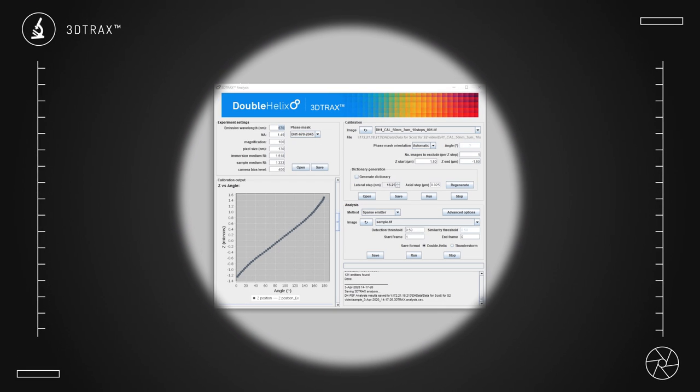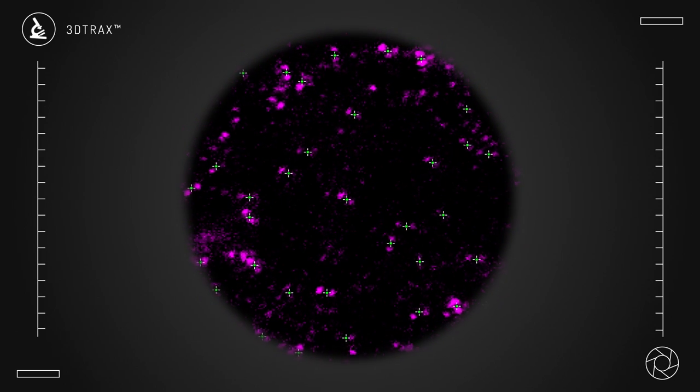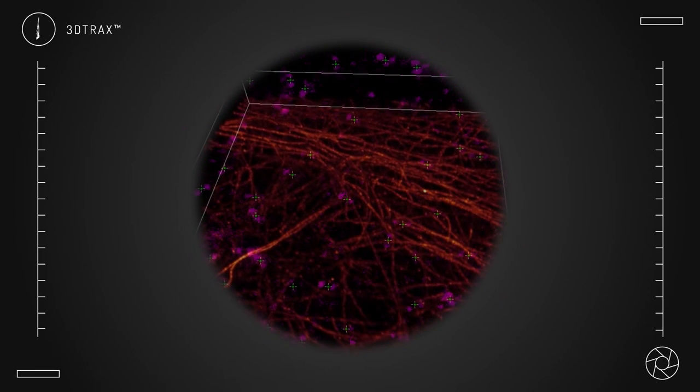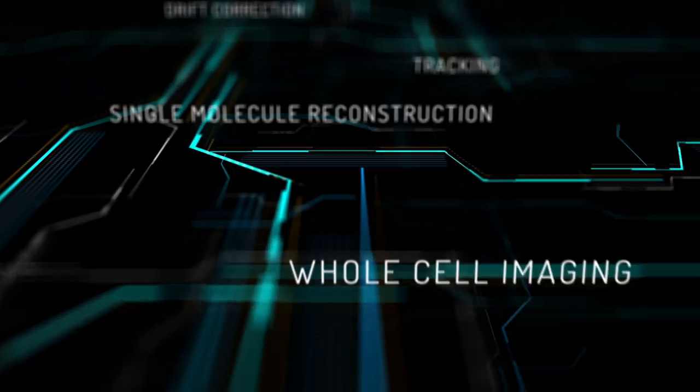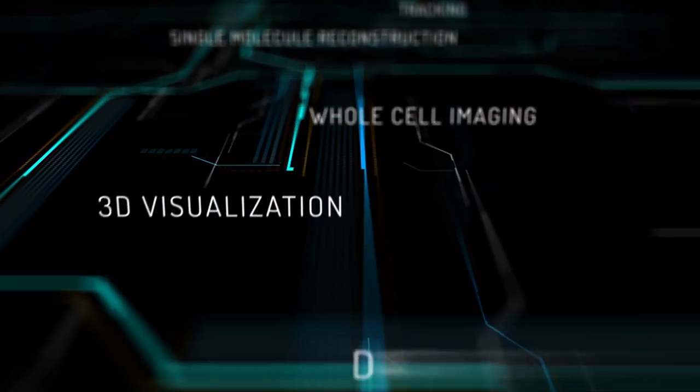The Spindle Squared is compatible with Double Helix's 3D Tracks software, providing the same user-friendly seamless experience of the original Spindle. Drift correction, tracking, single molecule reconstruction, and many more capabilities are all only a click away.